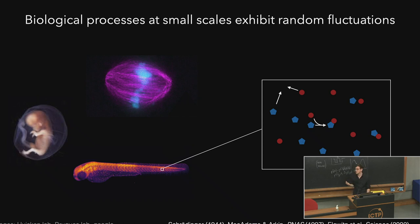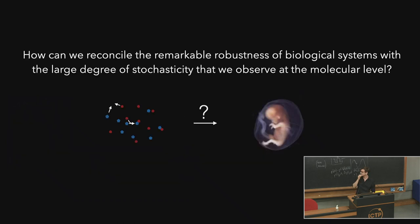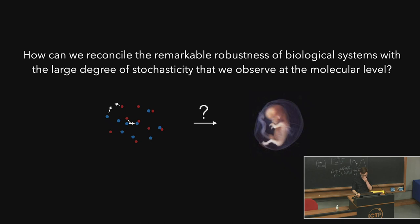At the same time, networks of chemical reactions can coordinate highly robust spatiotemporal programs — if you think about embryonic development, for example. The question that I have always been fascinated by since I moved from engineering into biology is how to reconcile the very remarkable robustness and precision of biological systems with the very large degree of stochasticity that we observe at the molecular level. My group really wants to understand how biological systems solve this problem and what strategies they can use to buffer and control stochasticity, but also to utilize stochasticity to ensure reproducible outcomes.